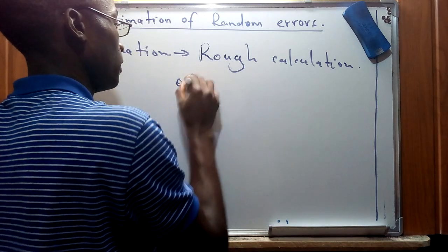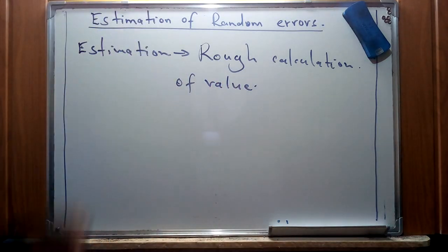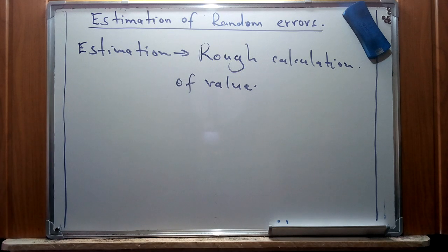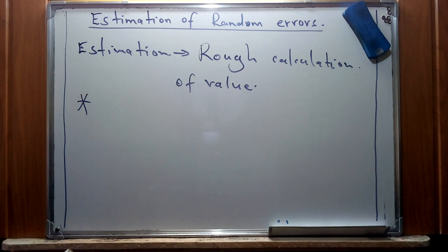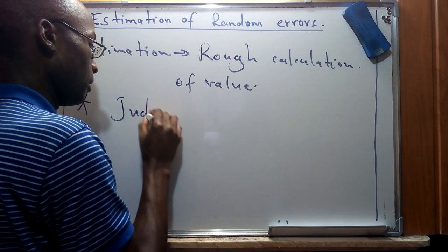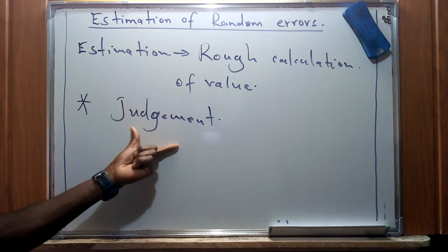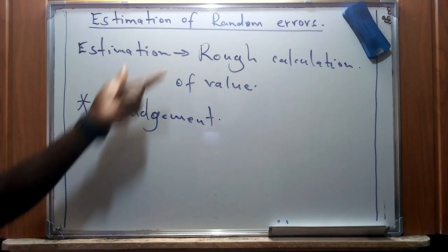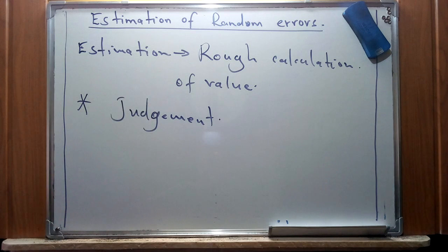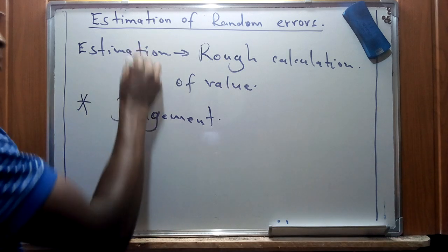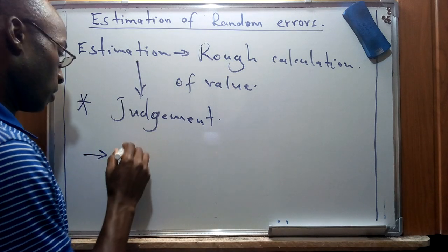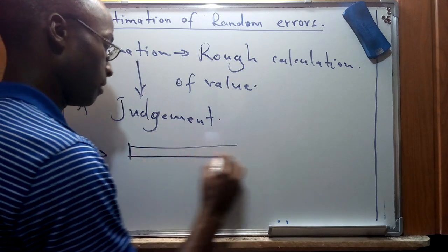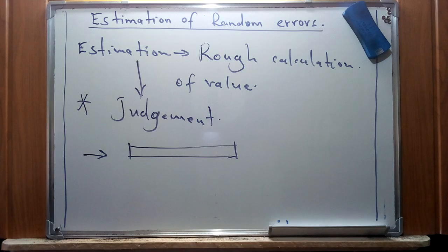Estimation is a rough calculation of a value of something. To do an estimation, we have to make a specific judgment or conclusion depending on how we have figured out the behavior of the range of numbers or quantities. For instance, if we measure the length of a specific object against the readings of a meter rule...